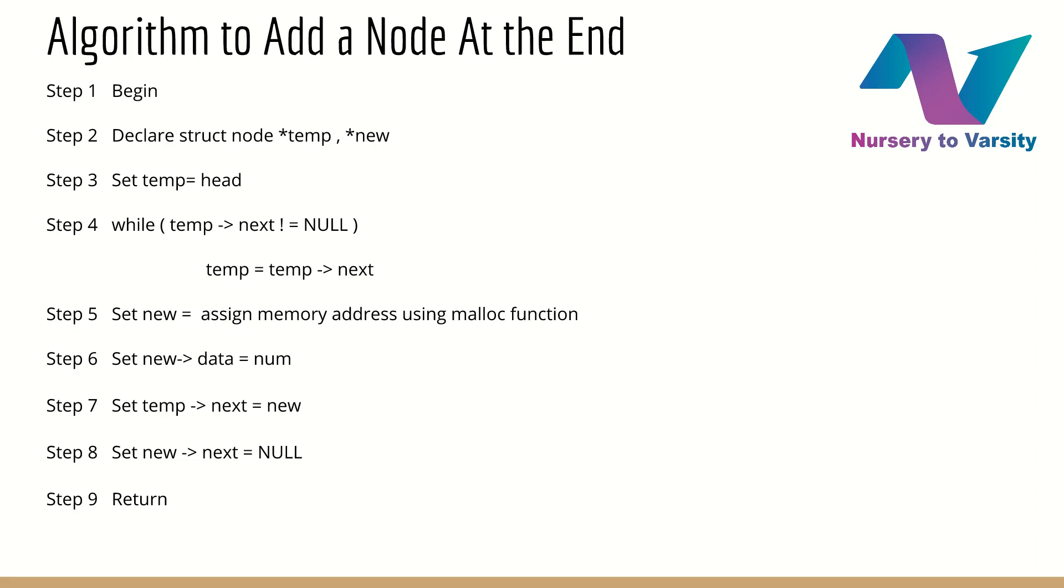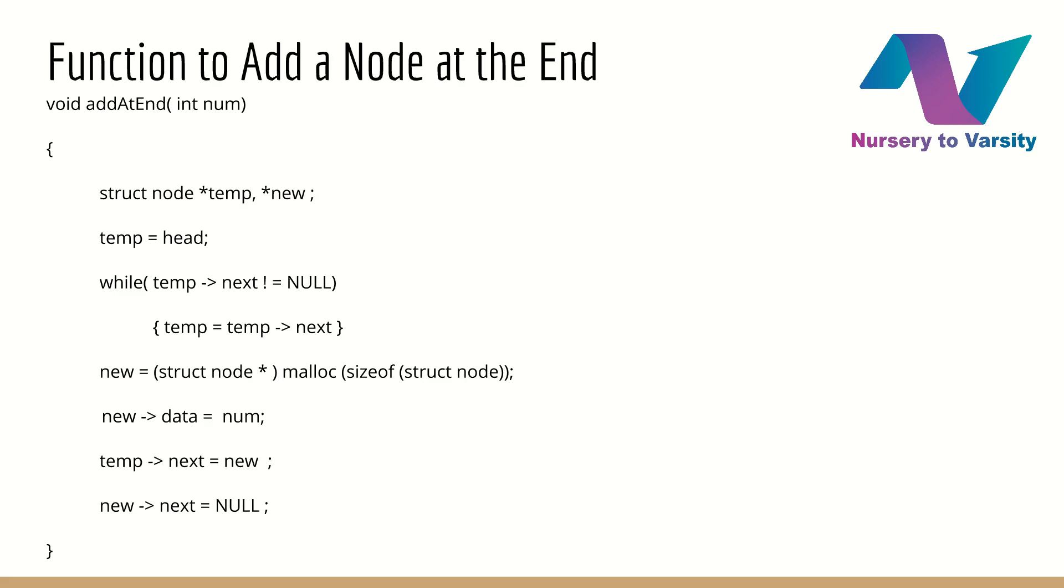After studying the algorithm, let's see the function to add a node at the end of the singly linked list, so that we can use this function in our code easily. Void add at end, we gave the name as add at end to the function for our convenience. Otherwise, we can give any name. Then, struct node star temp, star new means, according to our algorithm, this is the second step. Declare two pointers, temp and new, which will point to structure of type node.